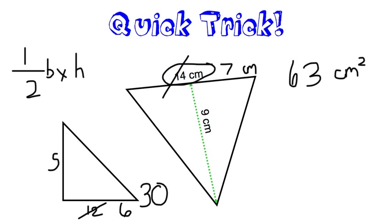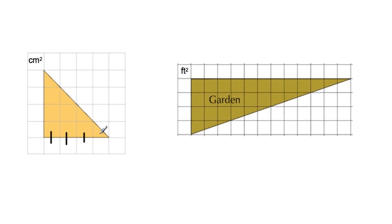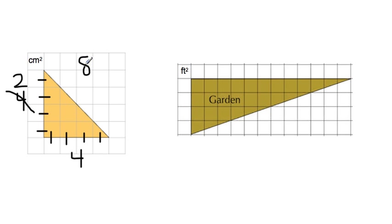Sometimes you'll see triangles on a grid where you have to count the number of sides. A lot of students want to count the squares, but an easy trick is to count the actual lines instead — so you don't get confused by half-squares. Looking at the bottom of this triangle, we count: 1, 2, 3, 4 lines — so the base is 4. Up the side we count: 1, 2, 3, 4 lines — height is 4. Using our quick trick, chop 4 in half to get 2, then multiply base times height: 4 times 2 equals 8 centimeters squared.